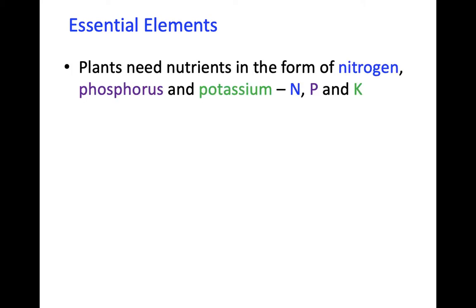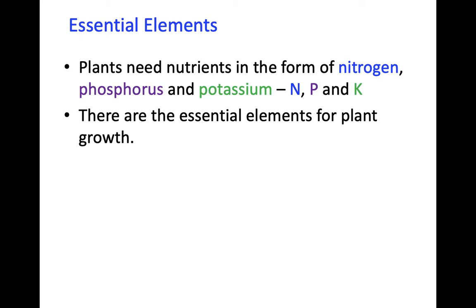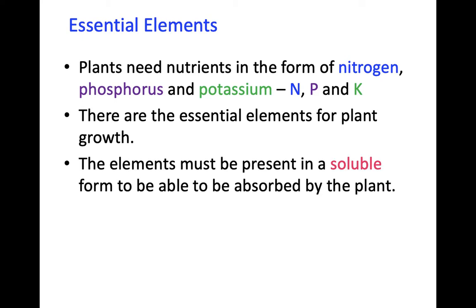Let's clarify what the essential elements for plants are. Plants need nutrients in the form of nitrogen, phosphorus and potassium — N, P and K. These are essential elements for plant growth. Each different plant needs different quantities of nitrogen, phosphorus and potassium to grow, but it is important that when we provide these elements to the plant they must be soluble. When we talk about soluble, it means they'll dissolve in water, and in so doing they'll be able to be absorbed by the plant through its roots.